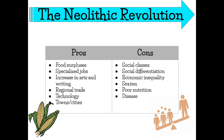Not everything about the Neolithic Revolution was great — there are cons too. Social differentiation led to social classes. People didn't have money back then, so they bartered. Think of it like trading in the cafeteria — switching your orange for someone's gushers. People bartered because they didn't have cash, so they traded what they could.